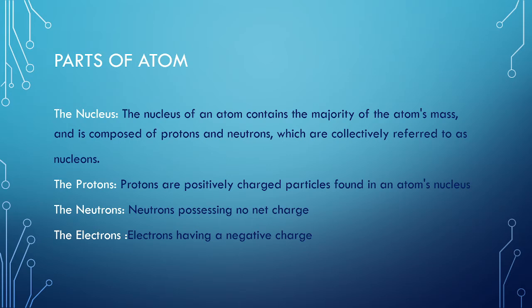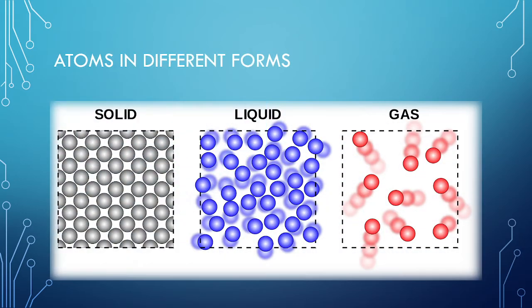Protons are positively charged particles found in an atom's nucleus. Neutrons possess no charge, meaning they are neutral. Electrons have a negative charge. Atoms exist in different forms.